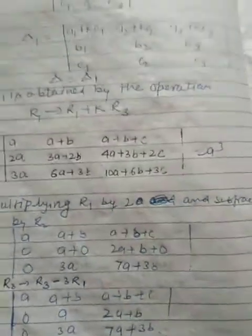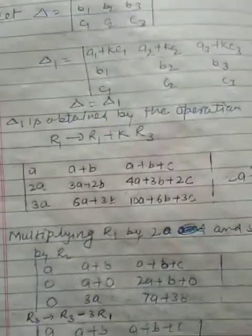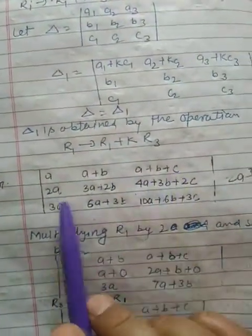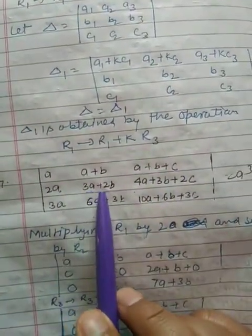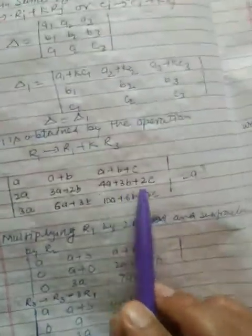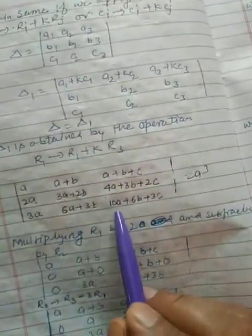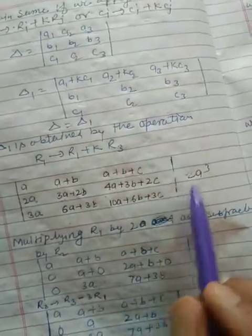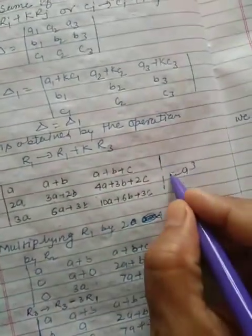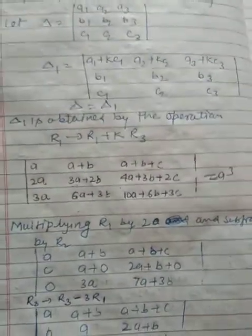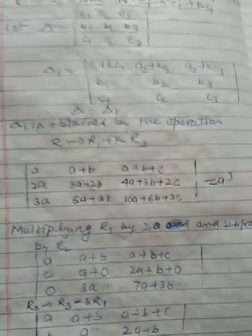Let us understand this property with an example. We have a determinant: first row is a, a+b, a+b+c; second row is 2a, 3a+2b, 4a+3b+2c; third row is 3a, 6a+3b, 10a+6b+3c. We have to prove this equals a³.